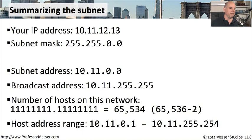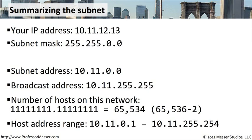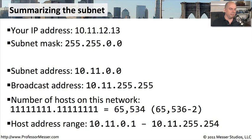Summarizing: IP address 10.11.12.13 with a 16-bit subnet mask gives us a subnet address of 10.11.0.0 and a broadcast address of 10.11.255.255. Anything in between will be hosts on this network. With 16 bits of network and 16 bits of hosts, that's 65,536 addresses. Subtract two, and we have 65,534 usable hosts. For the sanity check: 10.11 matches both ends, 12 is between 0 and 255, and 13 is between 1 and 254 — so 10.11.12.13 is definitely in range.